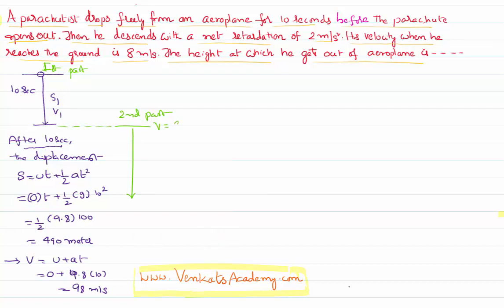By the time he comes to this location, he already has a velocity of 98 meters per second. It is given that while he is striking the ground he has a velocity of 8 meters per second, and he has a retardation of 2 meters per second squared. Being a retardation, we take it as -2.